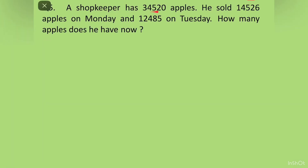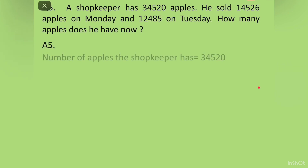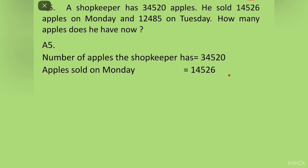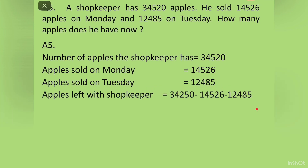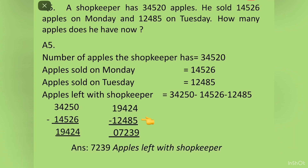Question 5: A shopkeeper has 34,520 apples. He sold 14,526 apples on Monday and 12,485 on Tuesday. We write: number of apples = 34,520, apples sold on Monday = 14,526, apples sold on Tuesday = 12,485. From the total we subtract both amounts sold. After subtracting Monday's sale and then Tuesday's sale we get the final answer: 7,239 apples left with the shopkeeper.